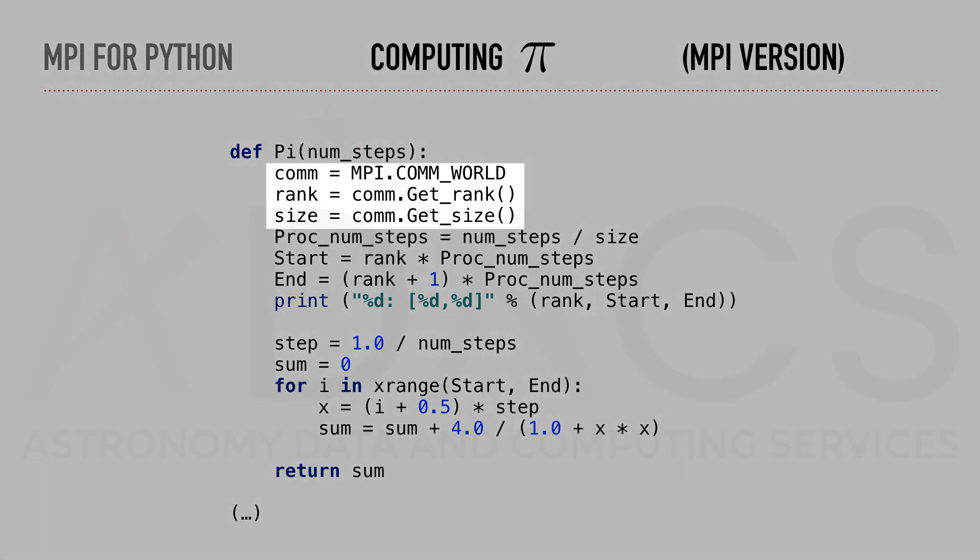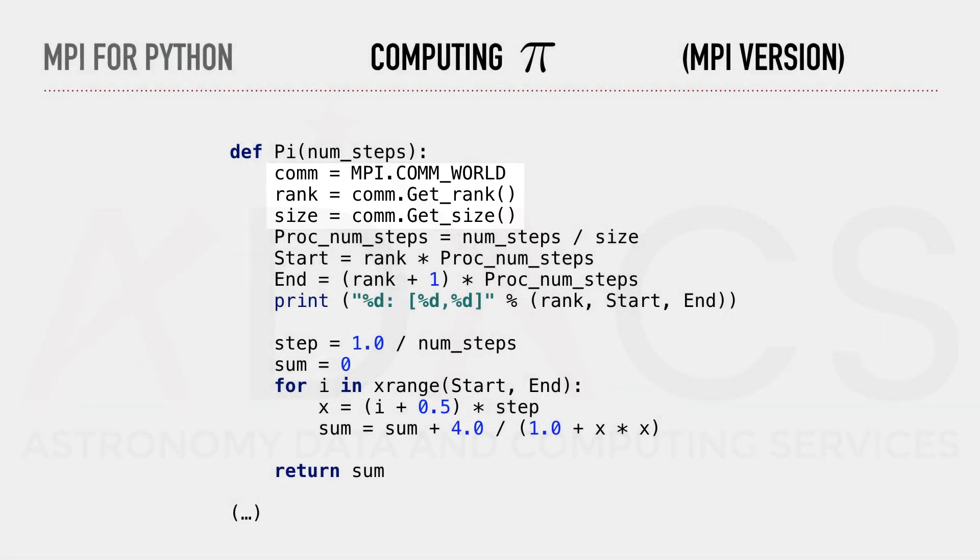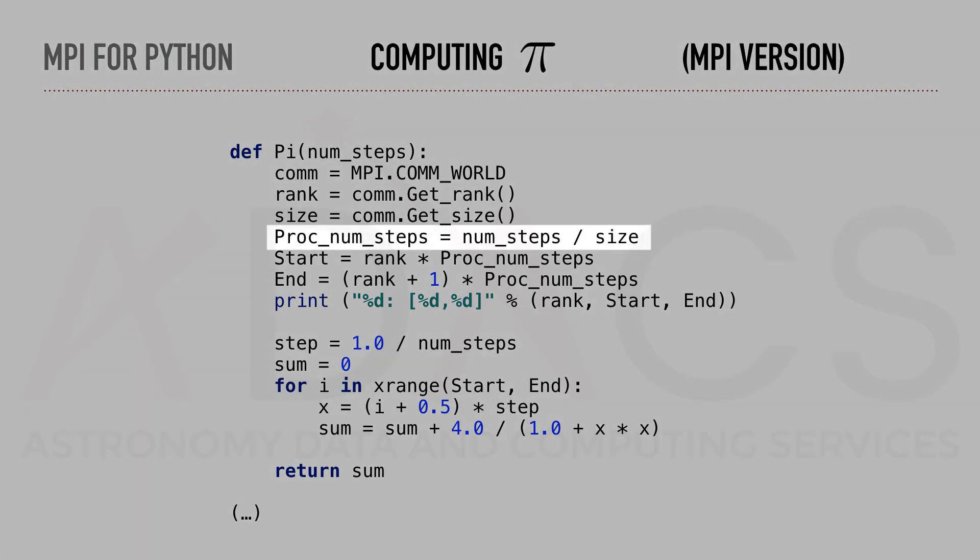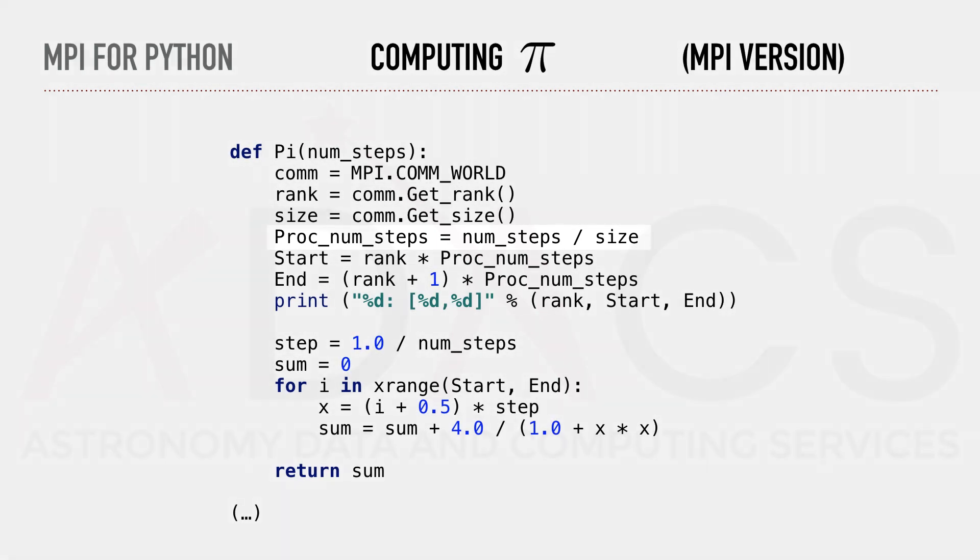As usual, we first collect information about the MPI comworld to retrieve the rank and size of each process. We also evaluate the number of steps that will be handled by each process and compute the start and end boundaries.